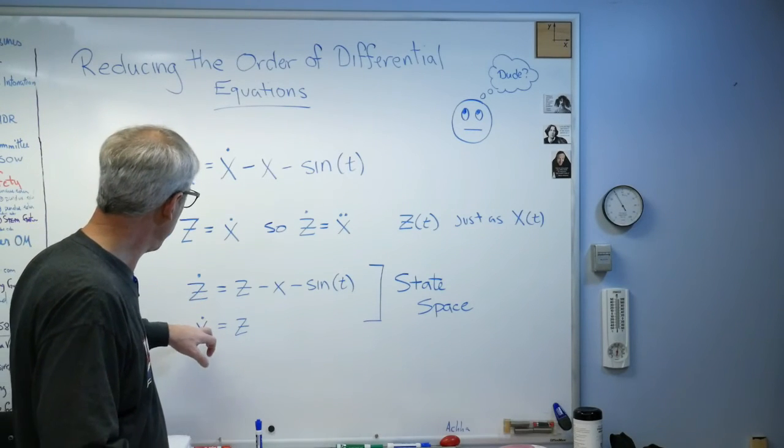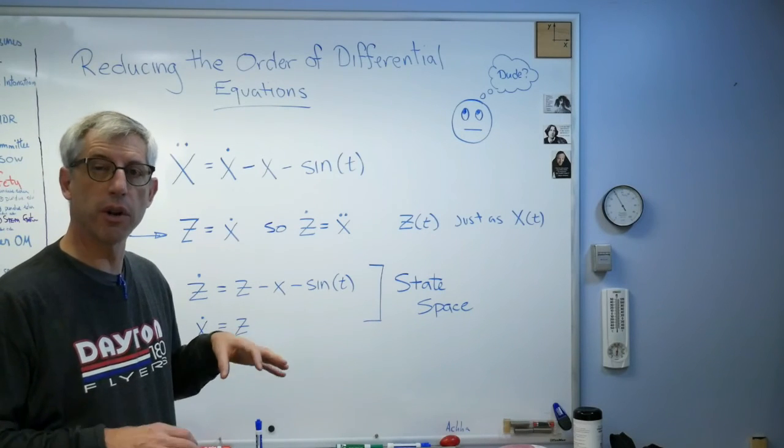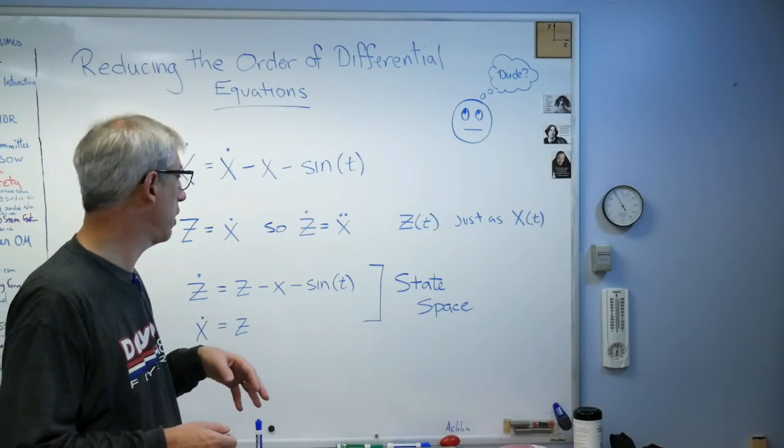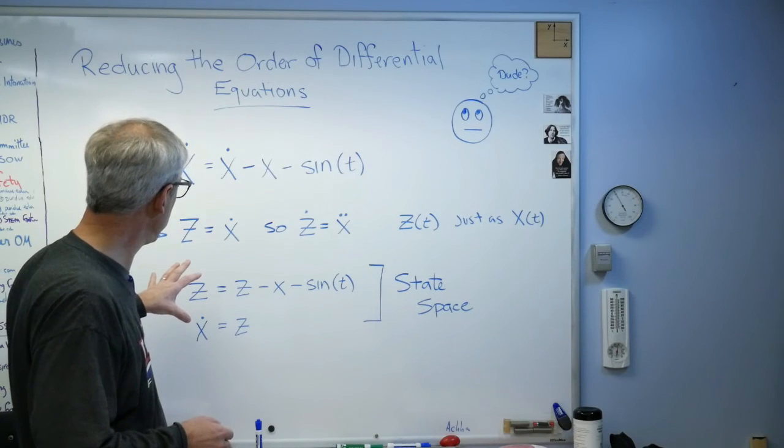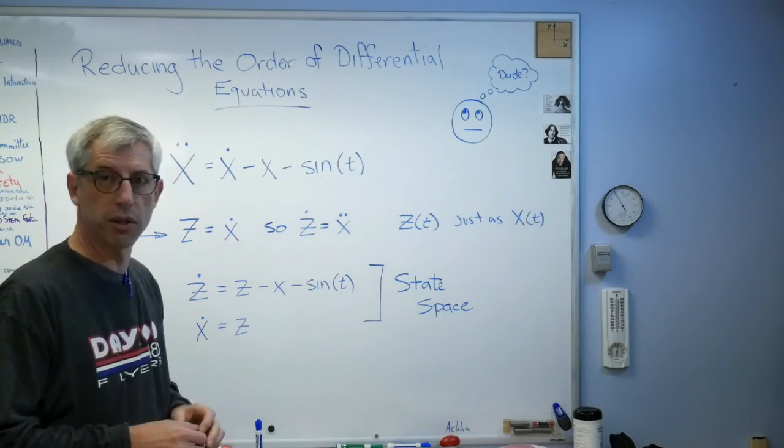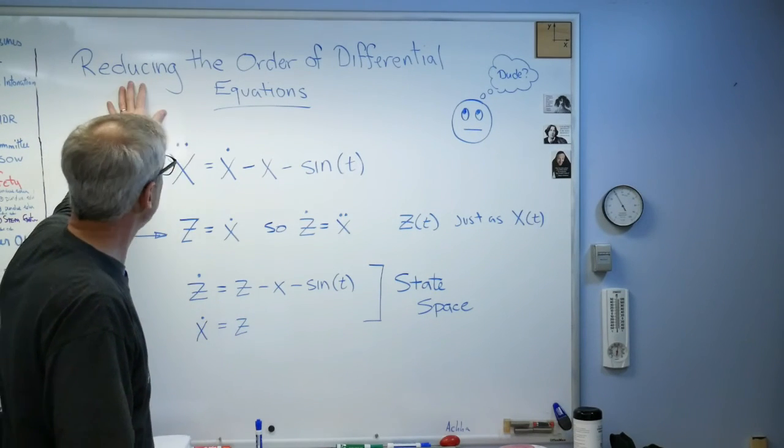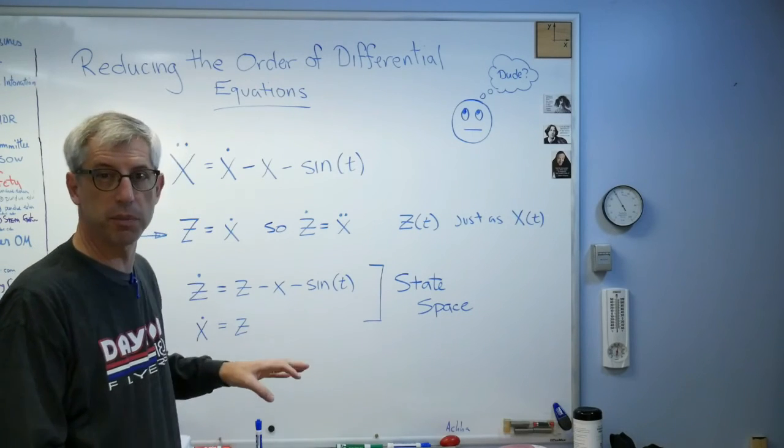Remember, we're finding z of t and x of t. But so a differential equation solver, an ODE solver, an ordinary differential equation solver, that doesn't know how to solve a second order differential equation generally can solve two first order differential equations. So there you have it. We're reducing the order of a differential equation by using state space.